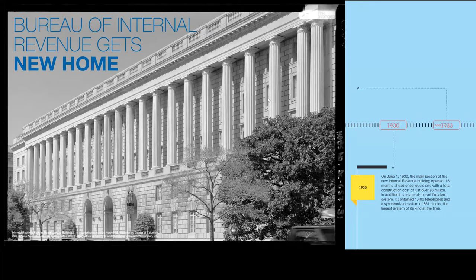1919, Prohibition. The Bureau of Internal Revenue gets a new home. On June 1, 1930, the main section of the new Internal Revenue Service building opened, 16 months ahead of schedule, with a total construction cost of just over $6 million. It contained a state-of-the-art fire alarm system, 1,400 telephones, and a synchronized system of 861 clocks — the largest system of its kind at the time. The Internal Revenue Service, being innovative again.